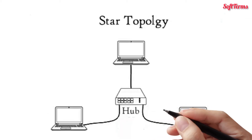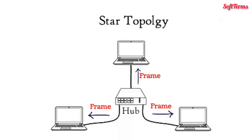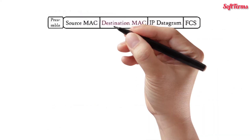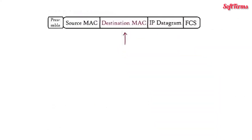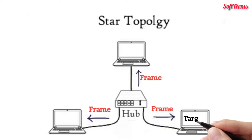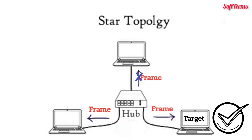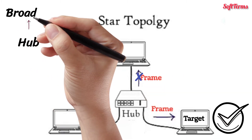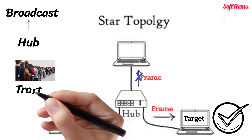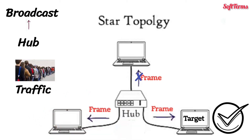If the central device is a hub, it broadcasts the received frame to all connected computers. A hub is a multi-port repeater. The frame has a destination MAC address which is unique to every computer in the network, so only the target computer accepts the frame — others discard it. Since a hub broadcasts the received frame, it increases unnecessary data traffic in the network.